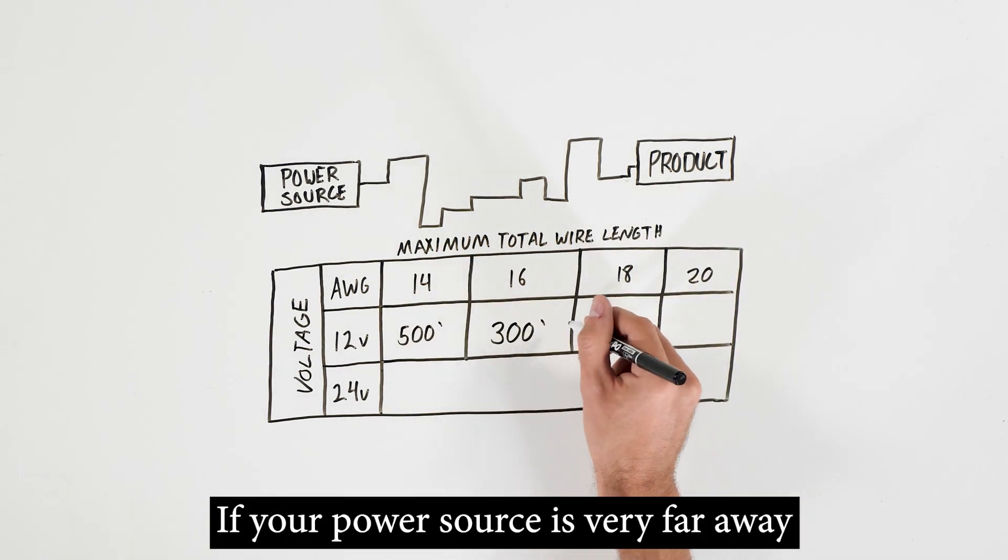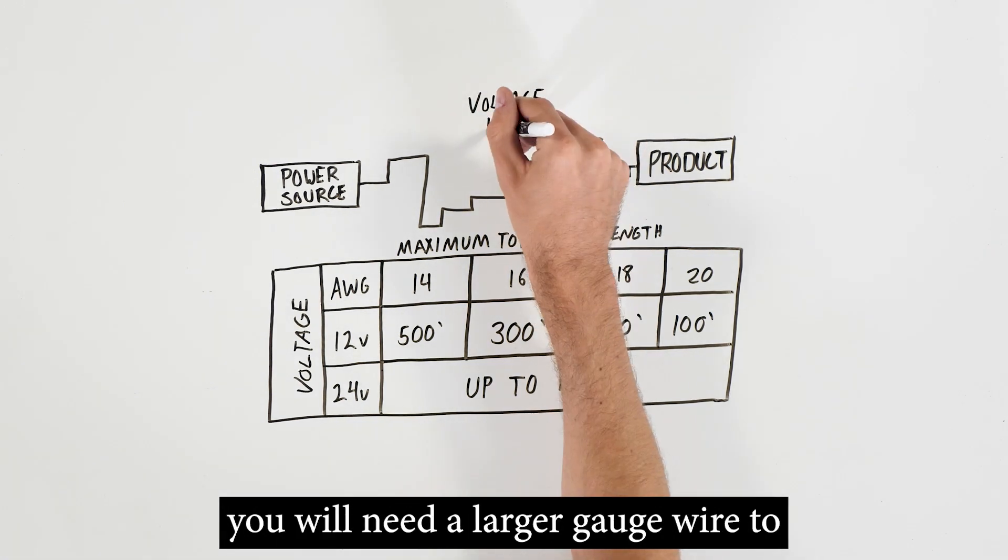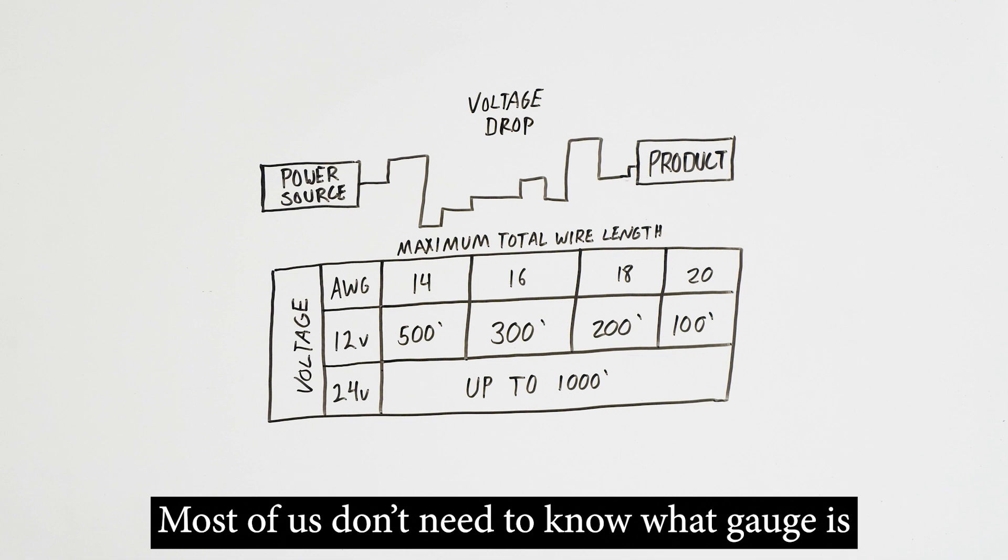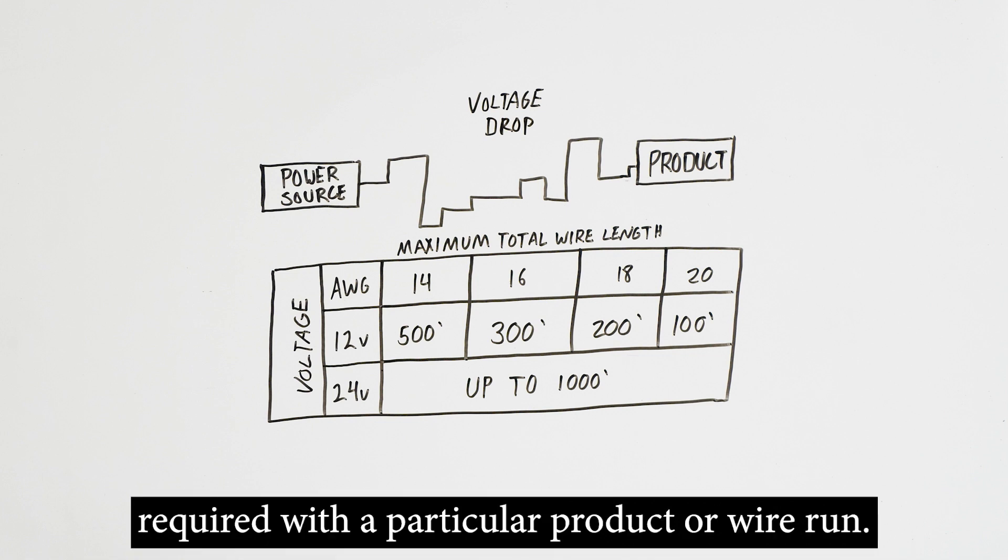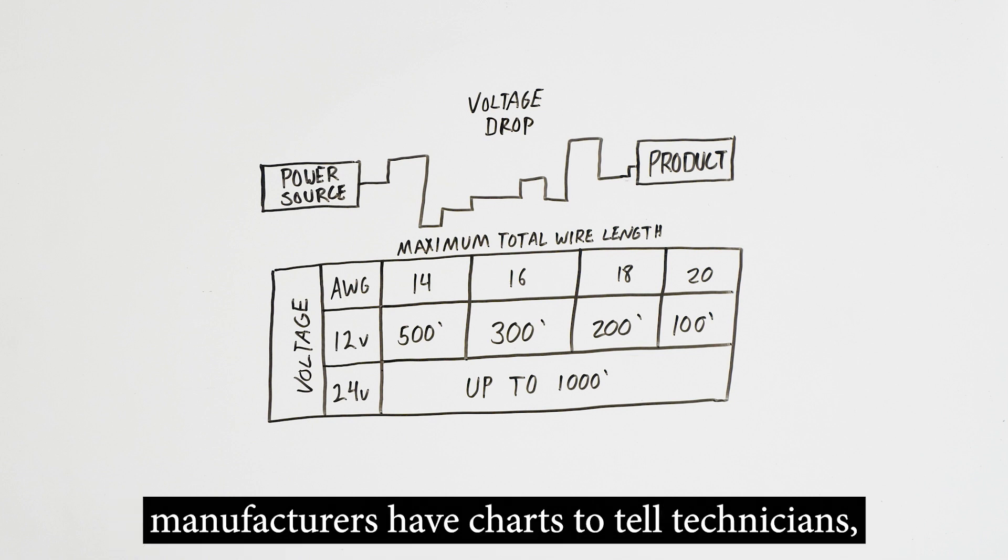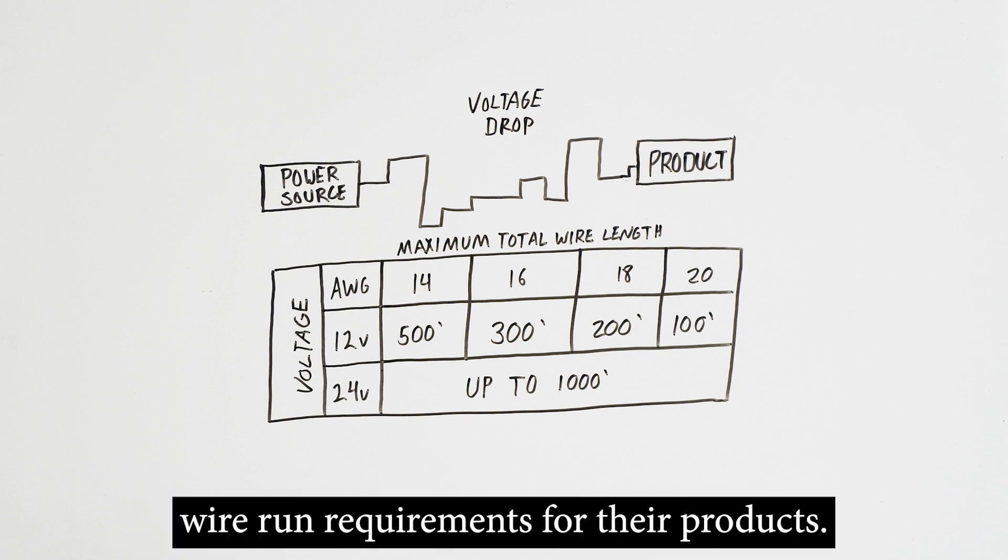If your power source is very far away from your electrified locking product, you will need a larger gauge wire to make the system work properly. Most of us don't need to know what gauge is required with a particular product or wire run. We just need to know what gauge means and that manufacturers have charts to tell technicians, installers, and electricians any wire gauge and wire run requirements for their products.